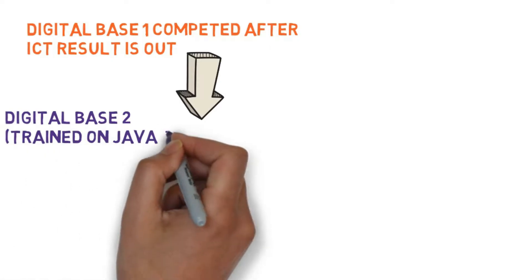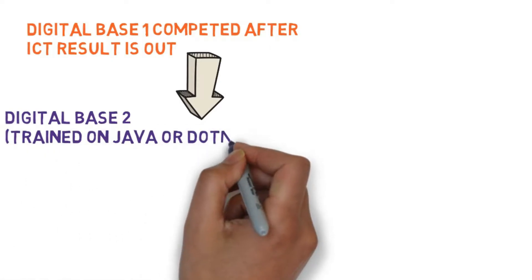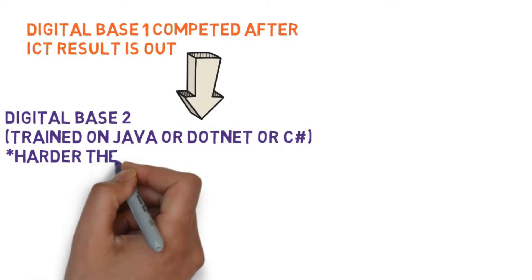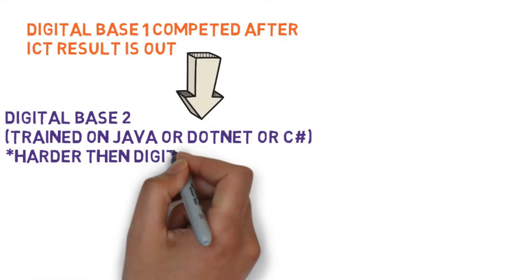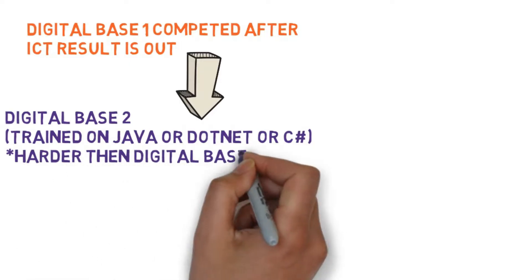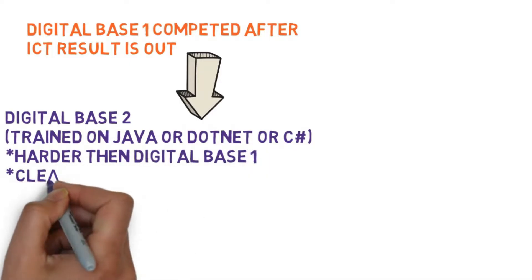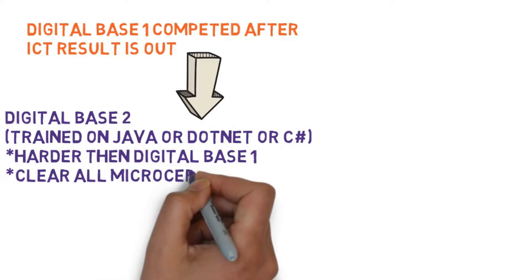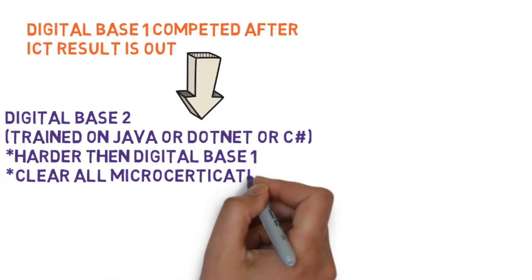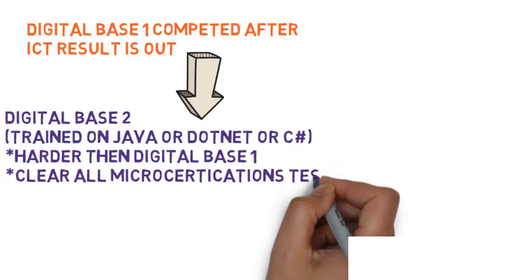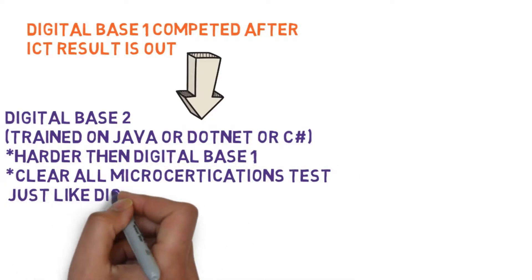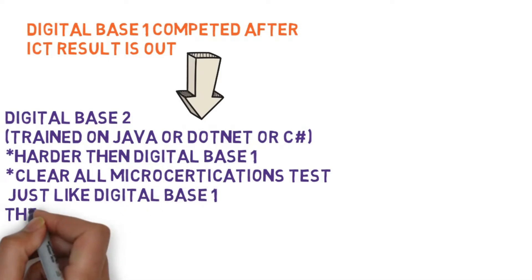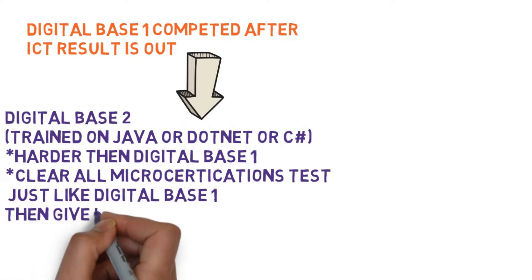In Digital Base 2, everything will be repeated just like Digital Base 1, but you will be trained on the basics of a specific domain like Java, .NET, or C#. Digital Base 2 will be definitely harder as compared to Digital Base 1.